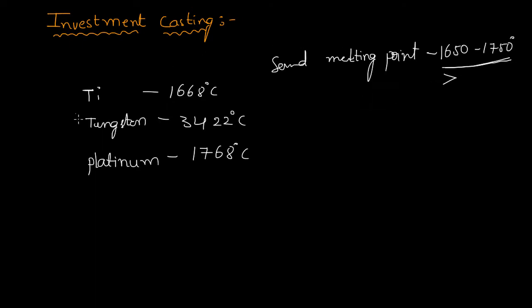For example, titanium's melting point is 1668 degrees Celsius, which falls between 1650 and 1750 — borderline. But we are not pouring molten metal exactly at the melting point. We apply superheat, raising the pouring temperature up to about 1730 degrees Celsius — roughly 60 to 50 degrees above the melting point. At that temperature, the sand will definitely melt and fuse with the casting material, which we don't want.